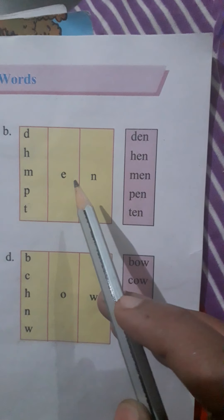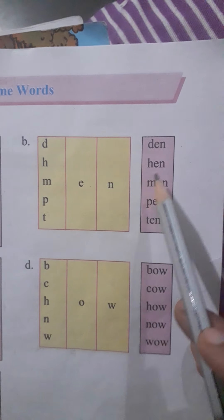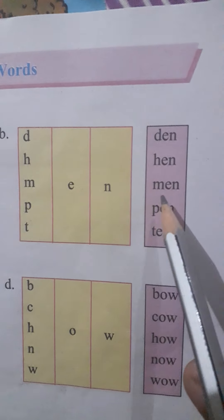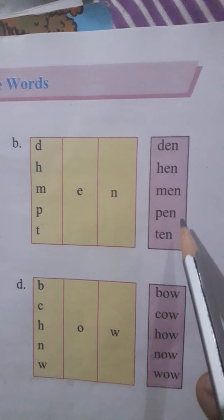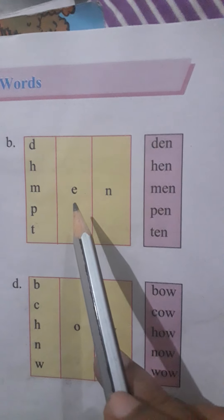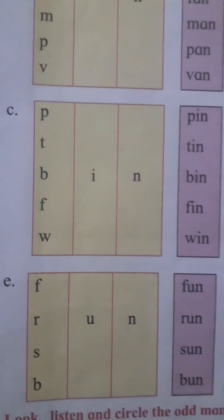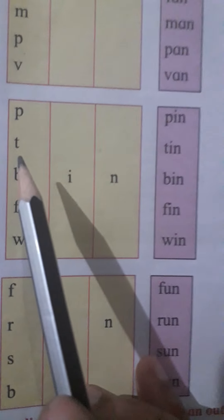D-E-N den, H-E-N hen, M-E-N men, P-E-N pen, T-E-N ten. So simple! Next table: P-I-N pin, T-I-N tin.